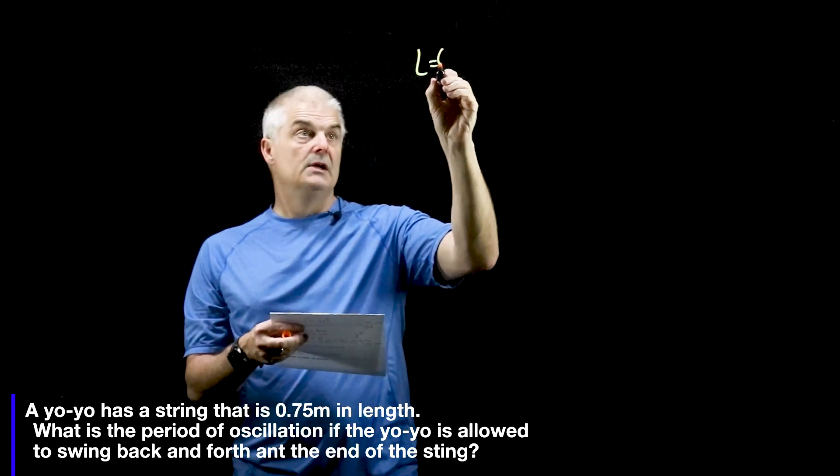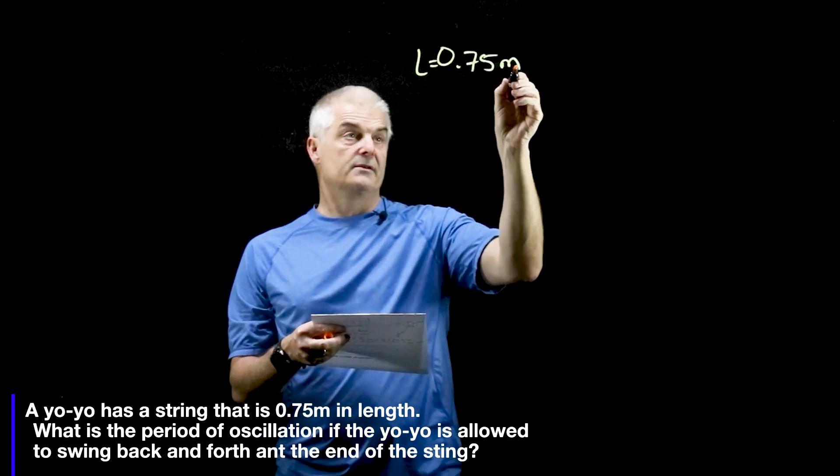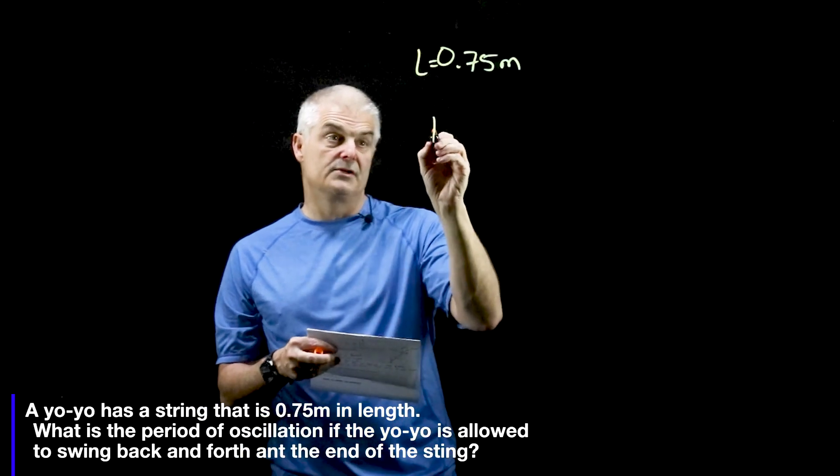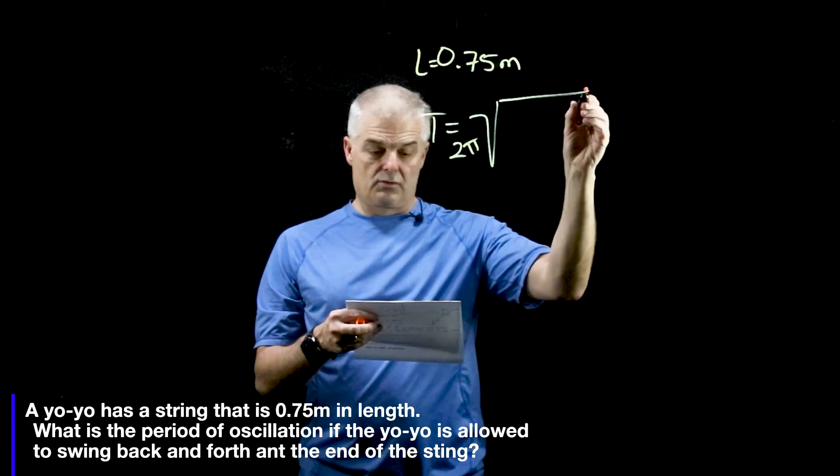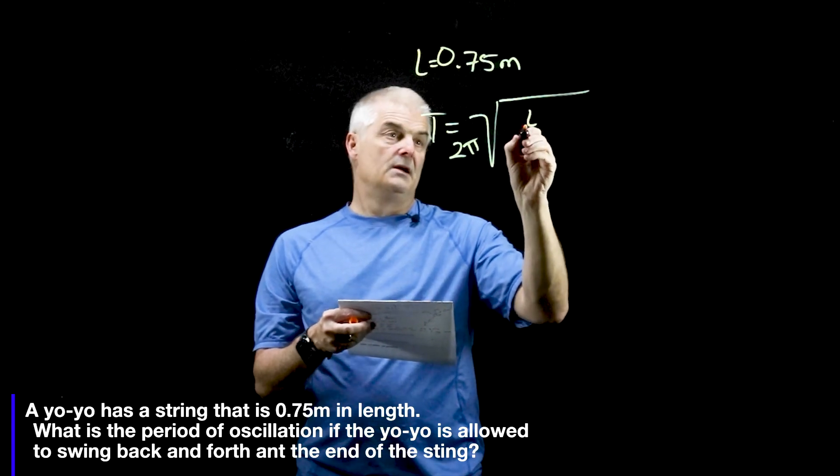L is equal to 0.75 meters. Well, folks, we're going to use our cool equation. T is equal to 2π times the square root of L over g.